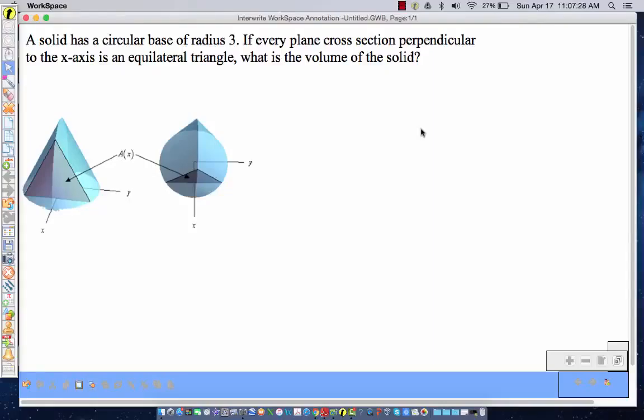All right, so what we have here is a solid and it has a circular base of radius 3. If every plane cross-section perpendicular to the x-axis is an equilateral triangle, what is the volume of the solid? All right, so here's a picture of it.